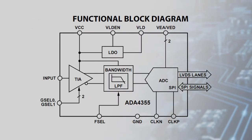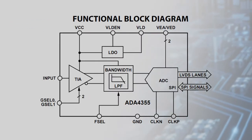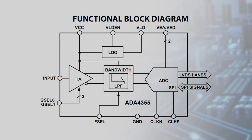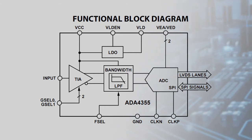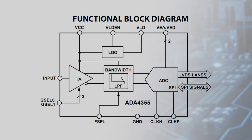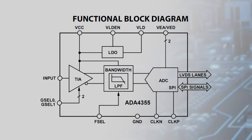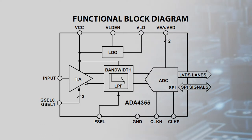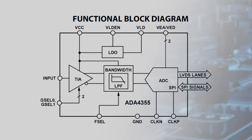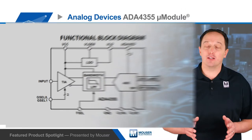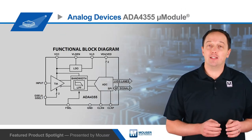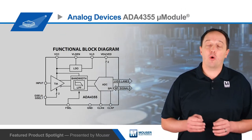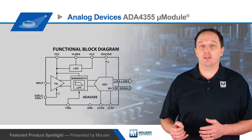The ADA4355 is a complete solution that integrates all active and passive components including supply decoupling. It integrates a high-speed transimpedance amplifier with three selectable gain settings for maximum dynamic range, with the ability to set TZ to 2 kohms, 20 kohms, or 200 kohms.